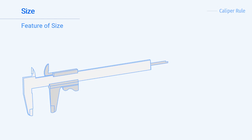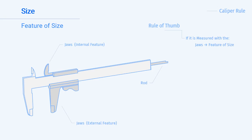First we will look at a vernier caliper, which contains jaws for measuring internal features, jaws for measuring external features, and a rod for measuring or probing depths. The caliper rule states that if the feature is measured with the jaws, it is a feature of size. If it is measured with the rod, it is not a feature of size. This is because the jaws measure using opposing points, where the rod does not.